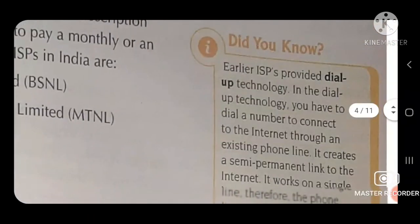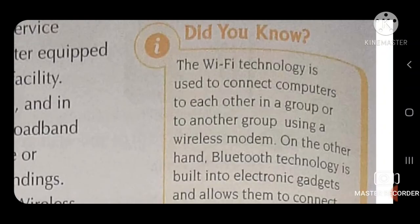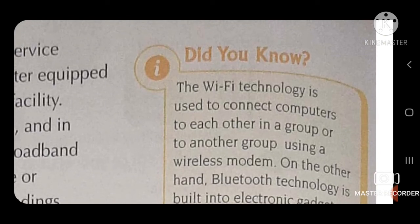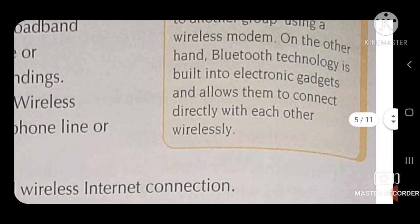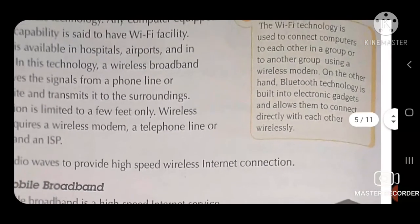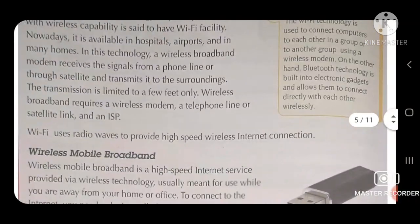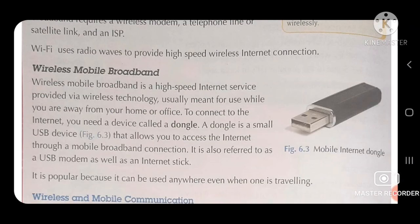Now let's read the Did You Know box. Wi-Fi technology is used to connect computers to each other in a group or to another group using a wireless modem. On the other hand, Bluetooth technology is built into electronic gadgets and allows them to connect directly with each other wirelessly. Wireless mobile broadband is a high-speed internet service provided via wireless technology, usually meant for use while you are away from your home or office.